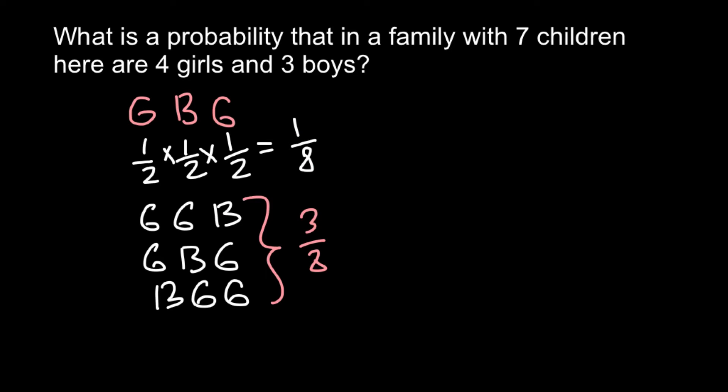This is the fundamental difference between problems where the order of events is given and when it is not given. In today's problem, order is also not given. We are told that in a family of seven children, we have to find the probability that the family would have four girls and three boys.